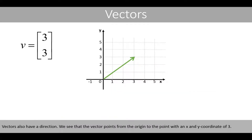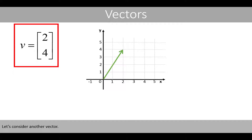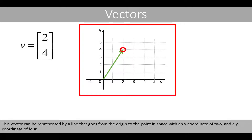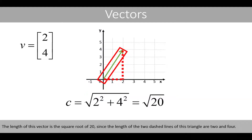Vectors also have a direction. We see that the vector points from the origin to the point with an x- and y-coordinate of 3. Let's consider another vector. This vector can be represented by a line that goes from the origin to the point in space with an x-coordinate of 2 and y-coordinate of 4. The length of this vector is the square root of 20, since the length of the two dashed lines of this triangle are 2 and 4.